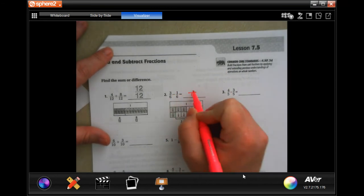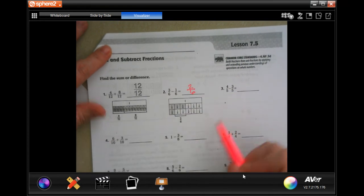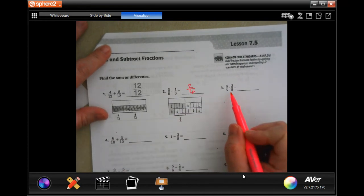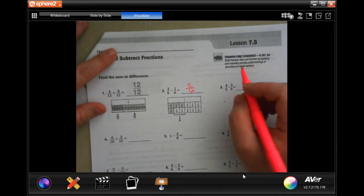So let's do number three. Denominator stays the same, four minus three is one. Okay, denominator stays the same, six plus three is nine.